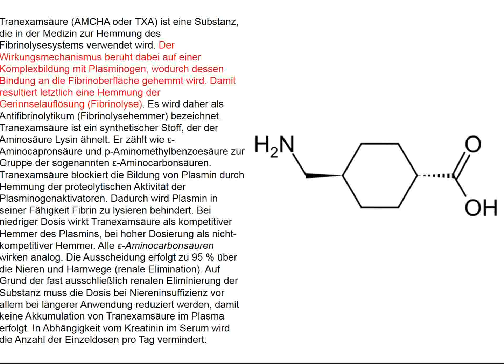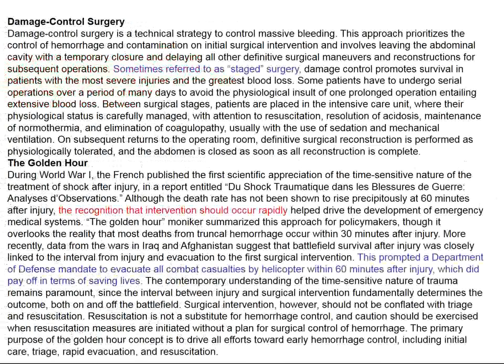Tranexamic acid has been verified across studies — as prophylaxis to avoid massive transfusions in coronary artery bypass surgery, during delivery, and in trauma patients. Damage control surgery involves doing operative procedures in stages — the most important procedure done first, with procedures that can be delayed by hours or days done later. The concept of the golden hour — getting the severely injured patient to an operating theater as quickly as possible — was also introduced in World War One.